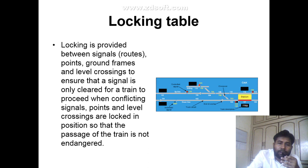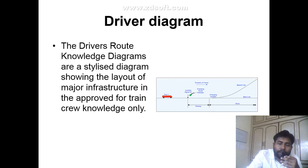Next is the locking table. The locking table is provided between signal, point, ground frame and level crossing to ensure that a signal is only cleared for a train to proceed when conflicting signals, points and level crossings are locked in position, so that the passage of the train is not in danger.